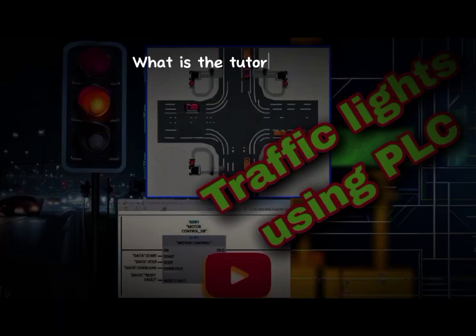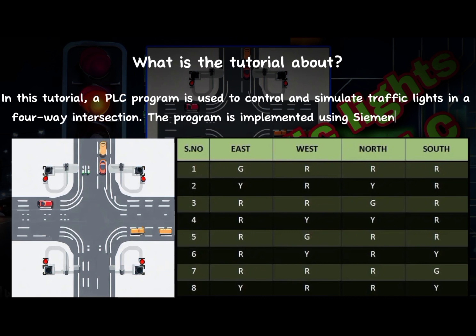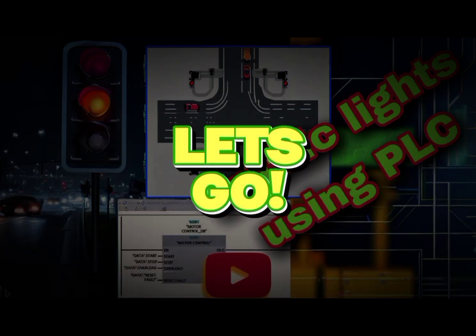What is the tutorial about? In this tutorial, a PLC program is used to control and simulate traffic lights in a four-way intersection. The program is implemented using Siemens TIA Portal. Let's go!